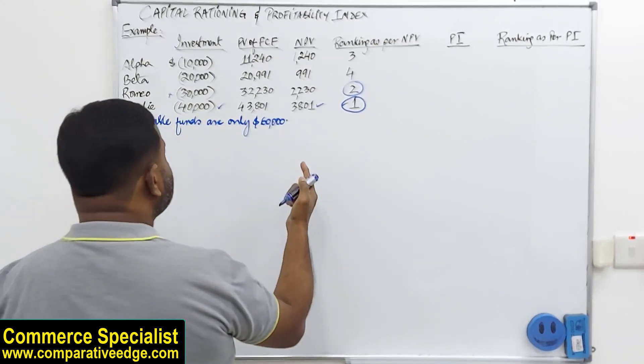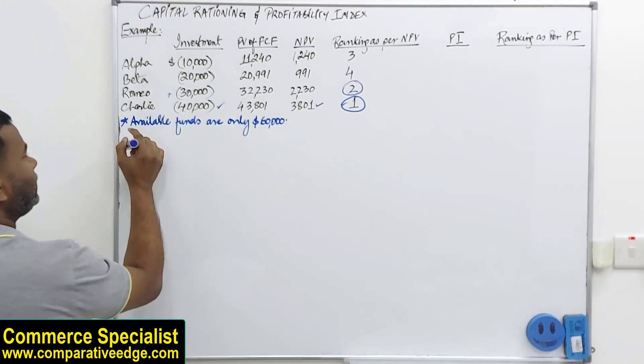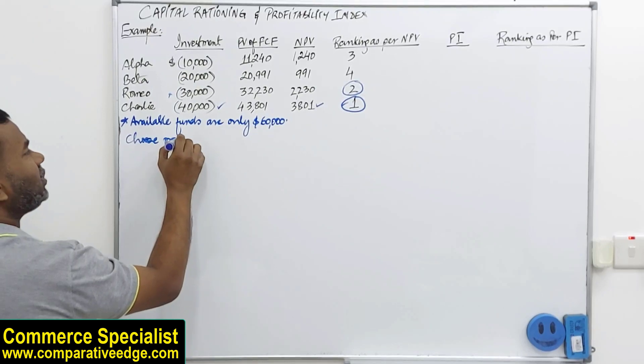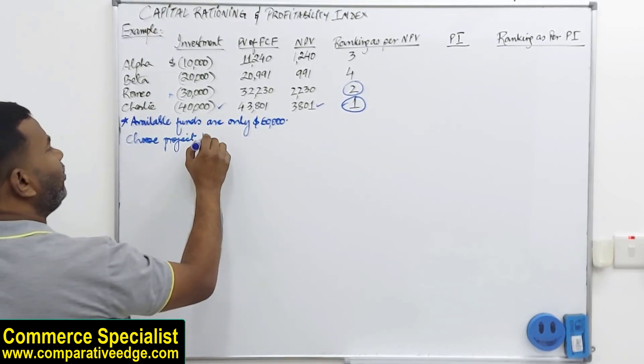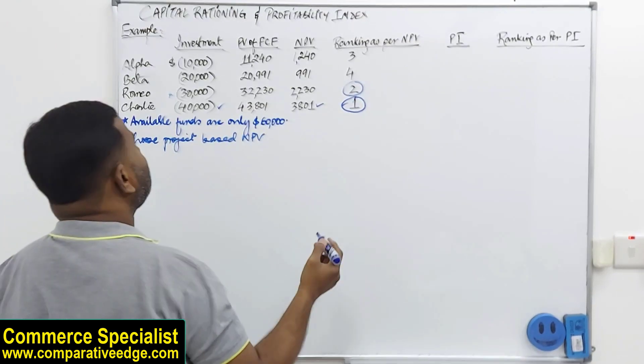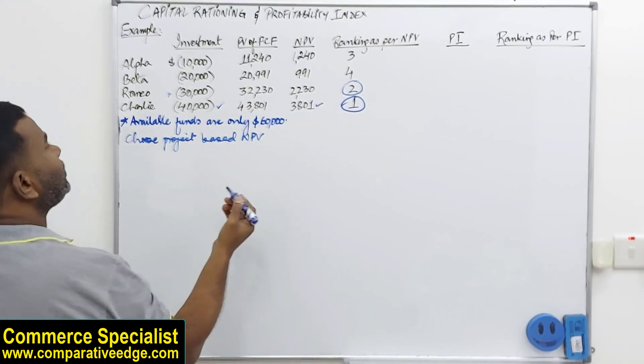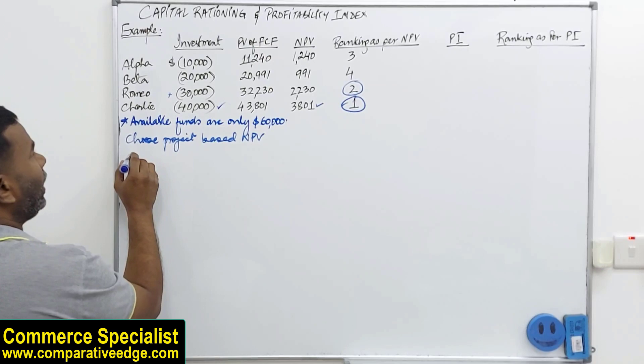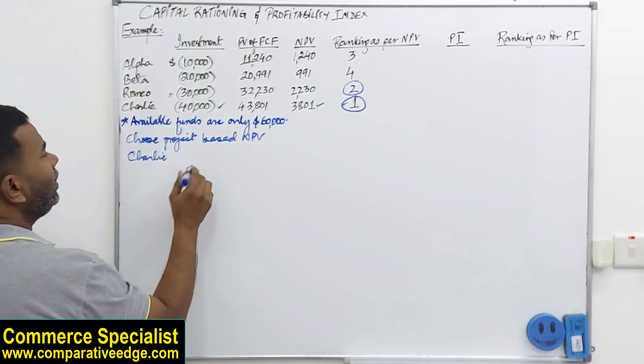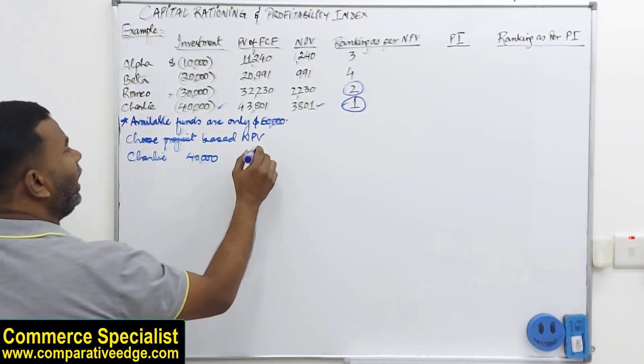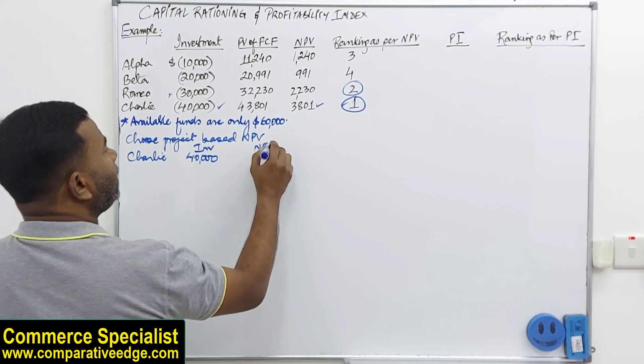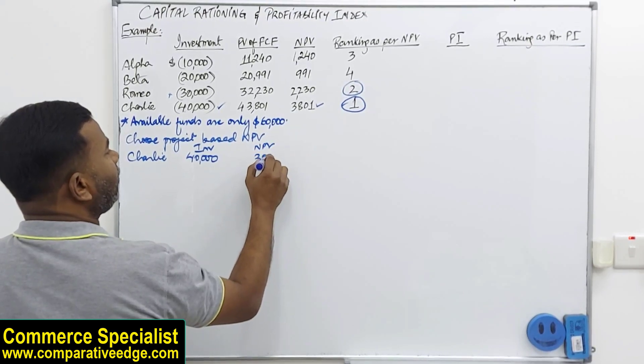So what I am going to do is, if I choose my investment in projects based on NPV and I am assuming that I can partly invest in a project, I would start with Charlie. It requires an investment of 40,000 and this will give me an NPV of 3,801.